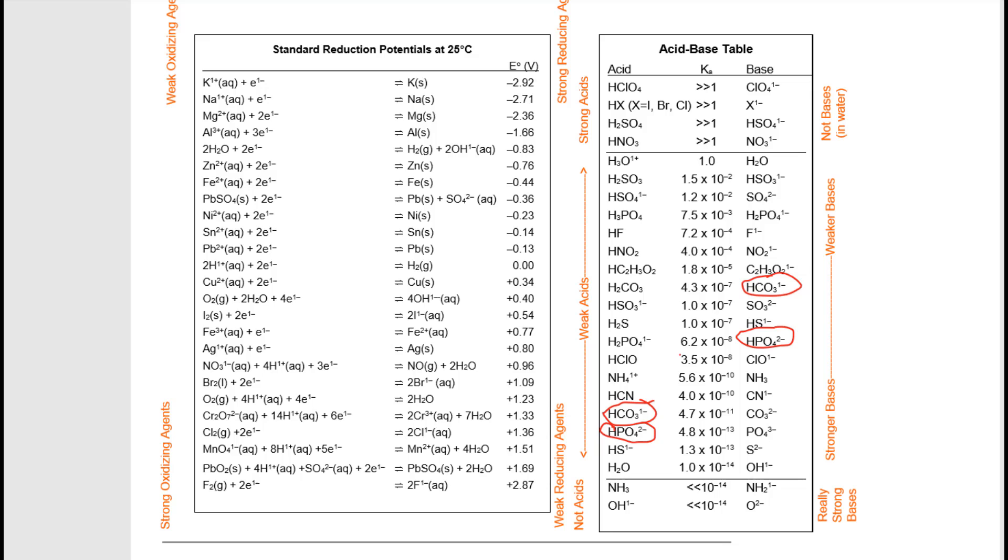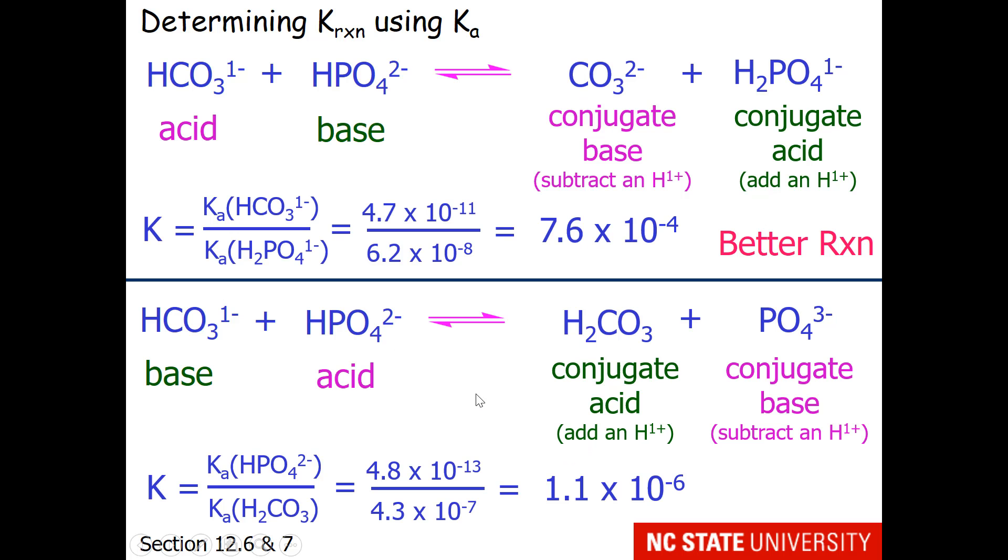Another way to figure this out is to look at the position of the materials on the table. I've circled hydrogen carbonate and hydrogen phosphate on both sides of the table. Hydrogen carbonate is the stronger acid because it's higher up on the left side. And hydrogen phosphate is the stronger base because it's lower down on the right side. So those assignments make sense. But if you're not sure of your results using the table, you can always do the calculation.